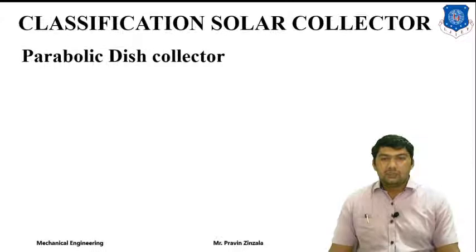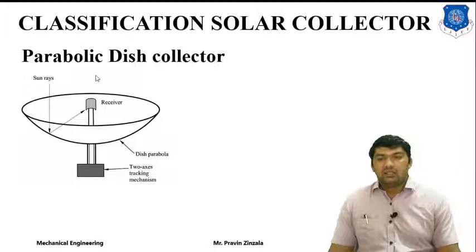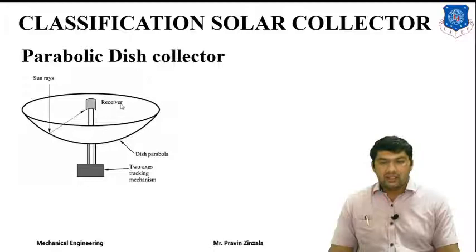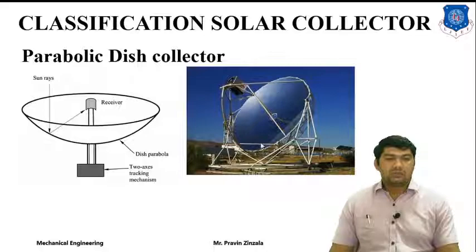Next is the parabolic disc collector, where the reflecting surface is in the shape of a parabola and the receiver is placed at the center — hence it is called a parabolic disc collector (PDC). Whenever solar radiation strikes the parabolic surface, it is transmitted and received at the receiver, generating higher energy. Applications of the parabolic disc collector include power generation, space heating, and advanced solar cooking for achieving higher temperatures. It is one type of point-concentrating type collector.